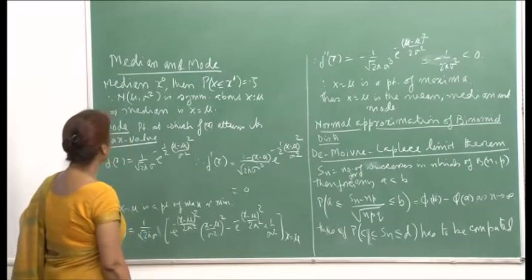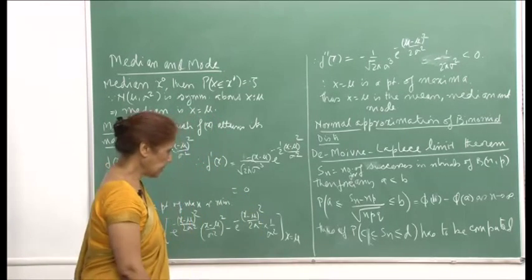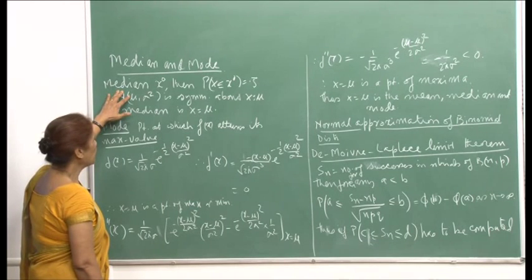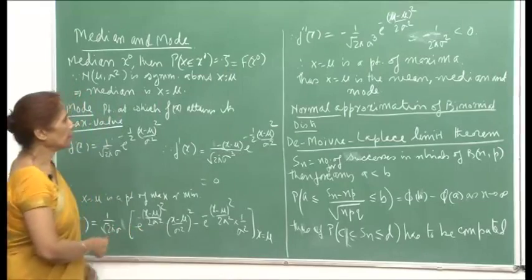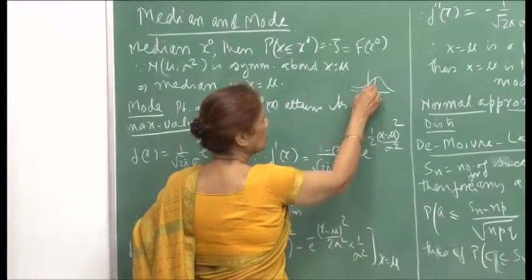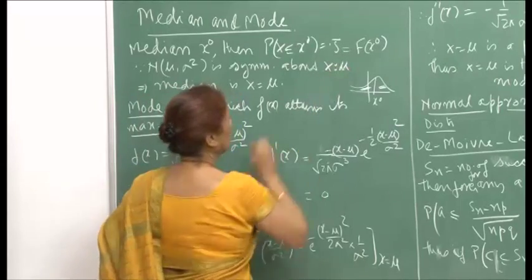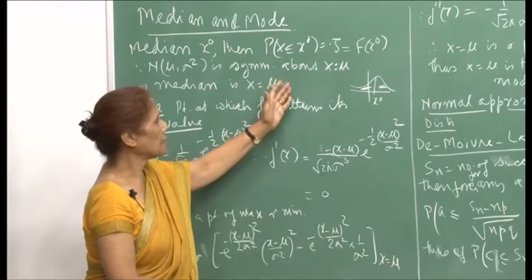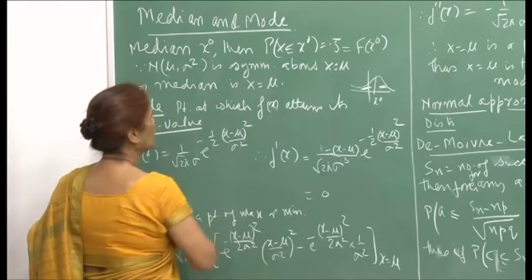Median and mode of a normal distribution. The median of a distribution is the number for which the CDF has the value 0.5 — that is, the area to the left is 0.5 and the area to the right is 0.5. Since we have already said the normal distribution is symmetric about x = μ, it is immediately clear that the area to the left of μ is 0.5 and to the right is 0.5. So immediately we know that the median is also at x = μ.